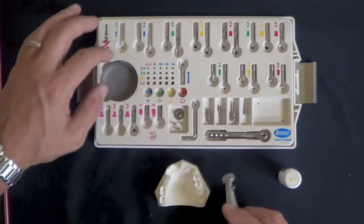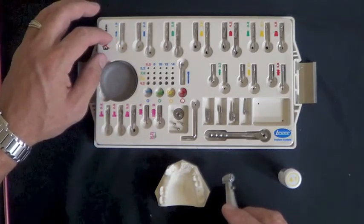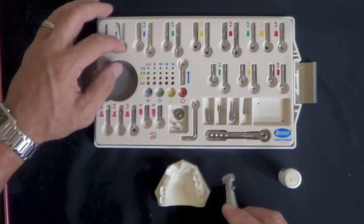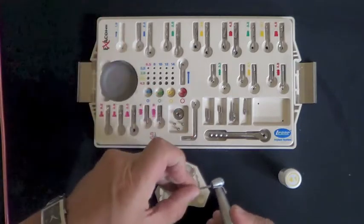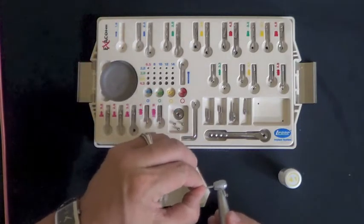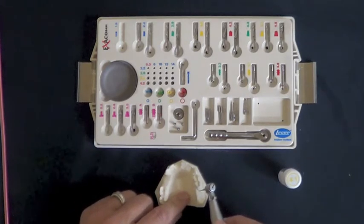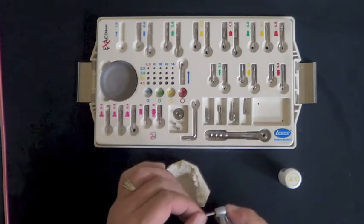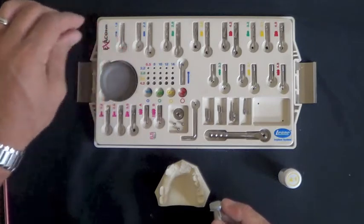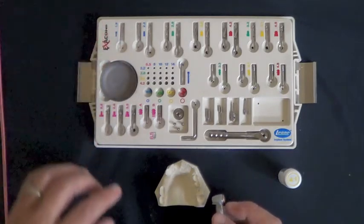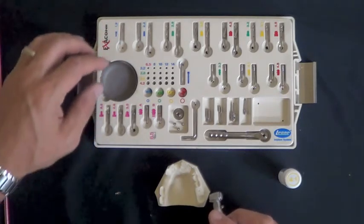Generally looking at the Leone Surgical Kit, we would normally start in a non-guided surgical placement by using the round burr in a surgical handpiece, running at about 1,200 to 2,000 RPMs. Make a purchase where you'd like to place the implant with the round burr.